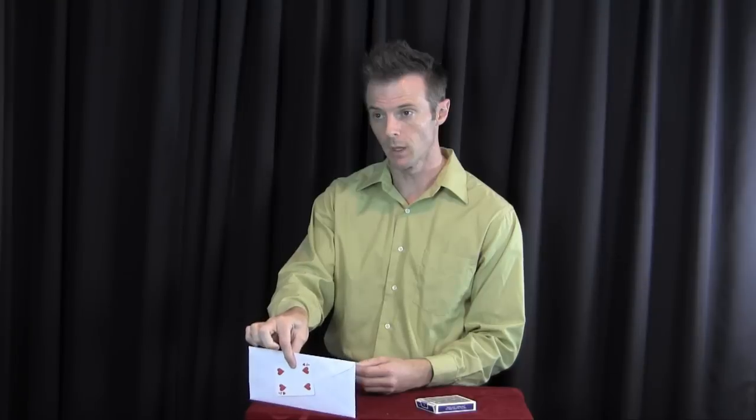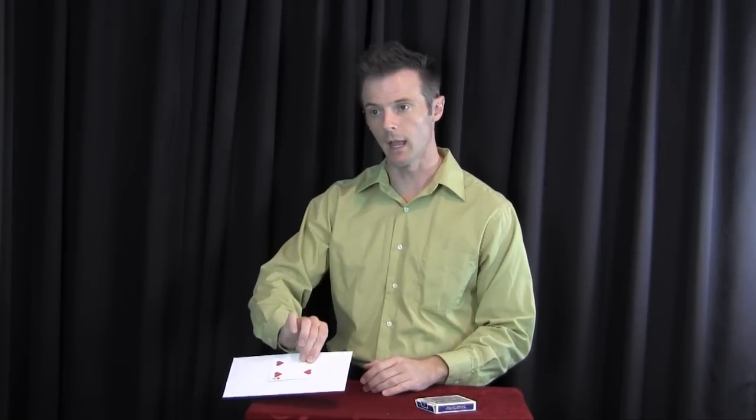Your card goes underneath the envelope so that it sits face down on the table. Now when I do this, I set it on the edge of the table with the card just barely poking underneath. So when I grab it, I can grab under the edge and pick up the card and the envelope at the same time.